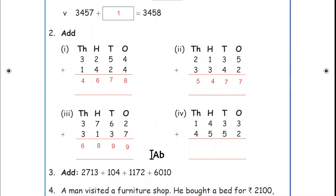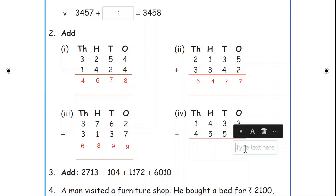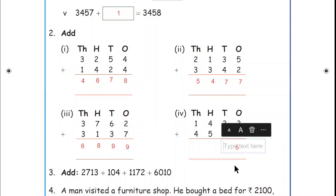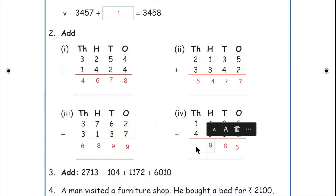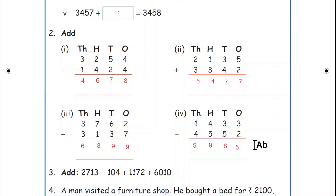Move to the fourth sum. Four digits are given: ones, tens, hundreds, thousands. Ones place: 3 plus 2 = 5. Tens place: 3 plus 5 = 8. Hundreds place: 4 plus 5 = 9. Thousands place: 1 plus 4 = 5.